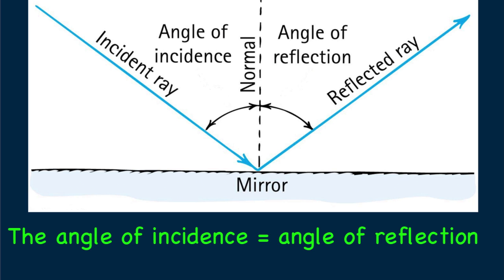The blue arrow represents a light ray. Instead of measuring the angles of incident and reflected rays from the reflecting surface, it's customary to measure angles from a line perpendicular to the plane of the reflecting surface. This imaginary line is called the normal. The incident ray, the normal, and the reflected ray all lie in the same plane.